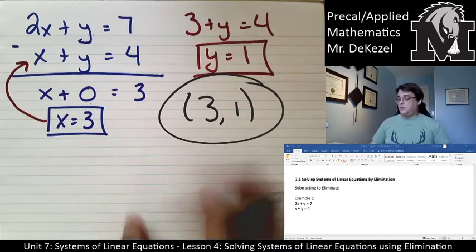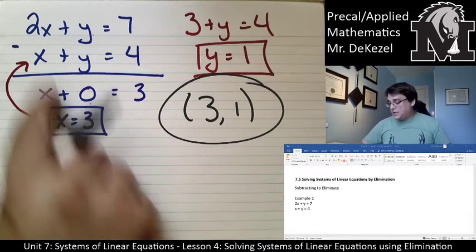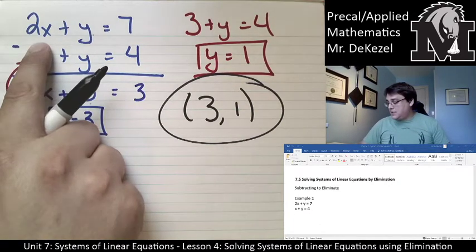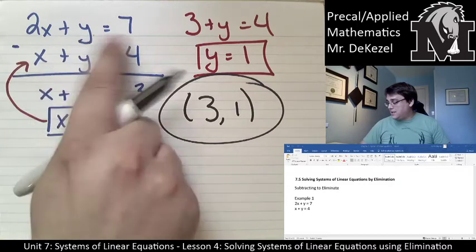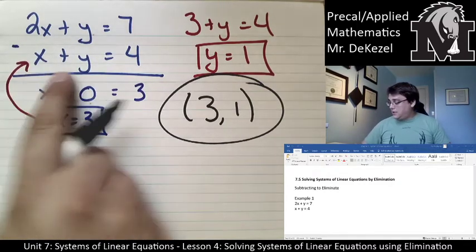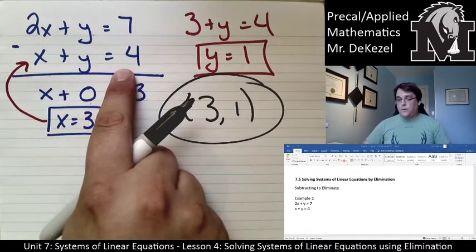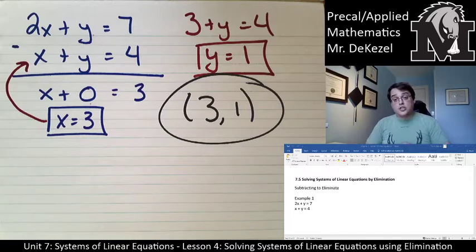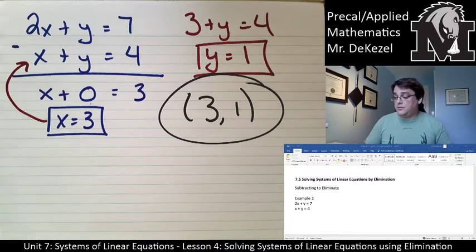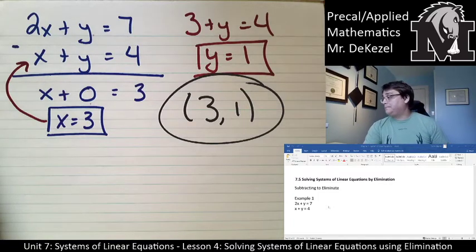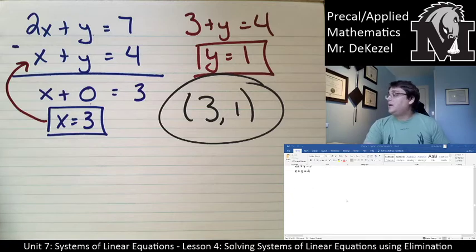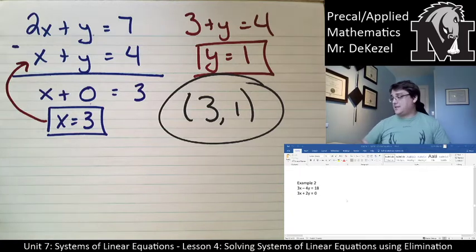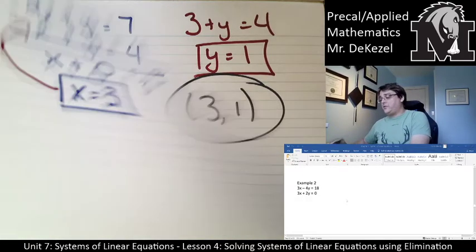You can plug these into each equation and check: 2 times 3 is 6, plus 1 is 7; 3 plus 1 is 4. That works out for both of them, so we've done a good job of finding x and y. We can continue on and do this for the next example as well.